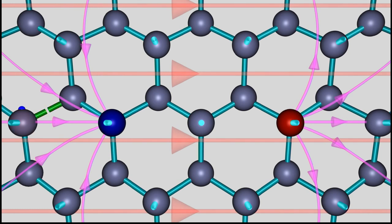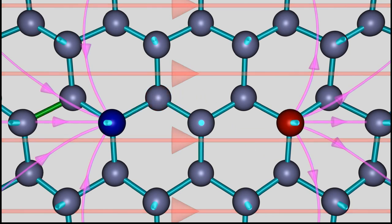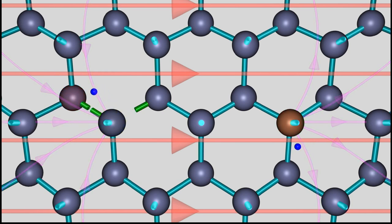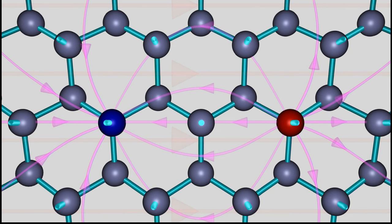An electron is extracted at the positive terminal and a hole starts drifting through the crystal lattice. An electron is injected at the negative terminal, which moves to the left according to the direction of the electric field. At the space between the two ions, the hole and the electron recombine and once again the movable charge carriers vanish. During this process, one electron has been transferred from the negative terminal to the positive terminal of the voltage source.